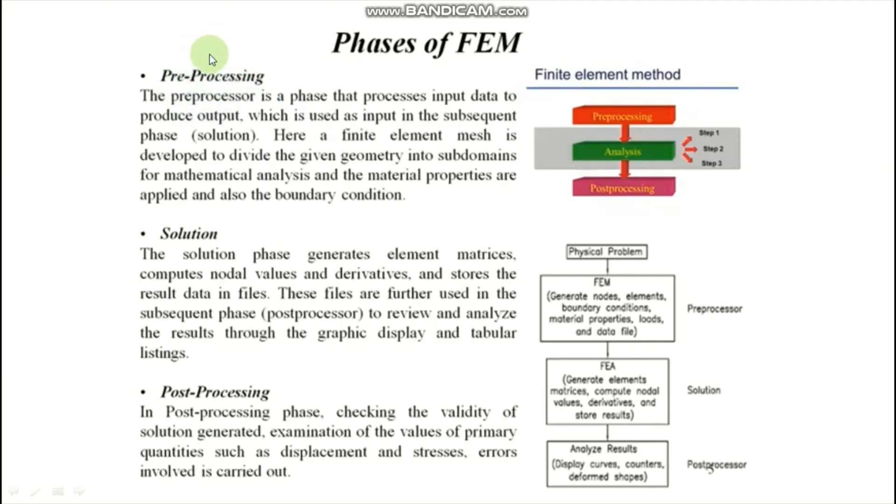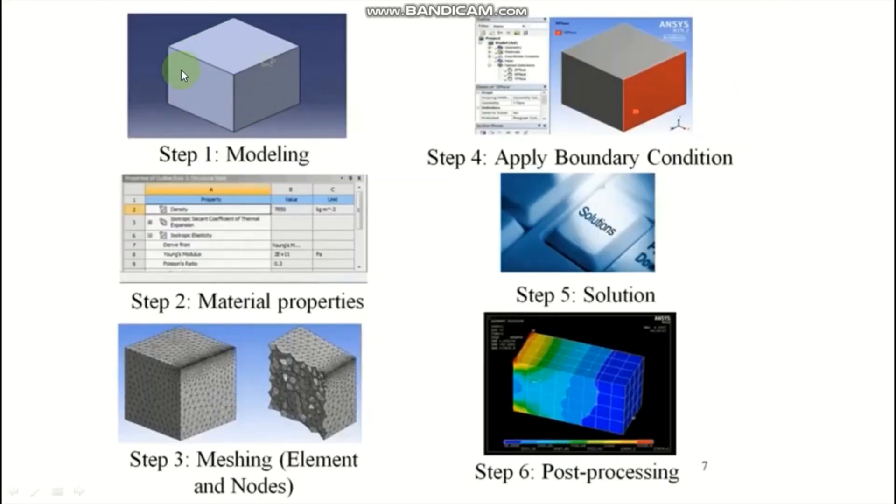What is required in pre-processing? First one, prepare a 3D part that is called modeling. You can see in the next slide, we create the 3D part that is called modeling. Second, nothing but the discretization, means divide the body into the number of finite parts. Third one is material property, like modulus of elasticity, Poisson's ratio, we have to assign if we are going for the static analysis.